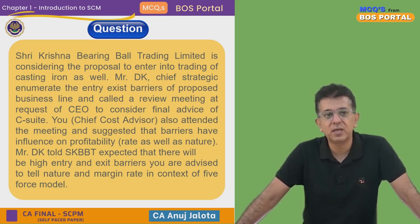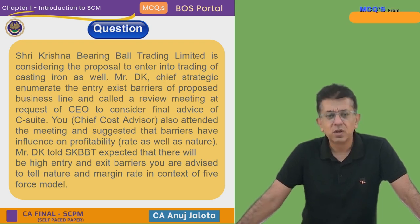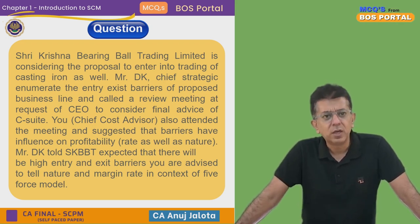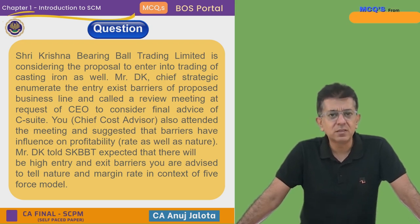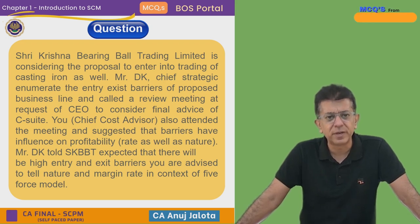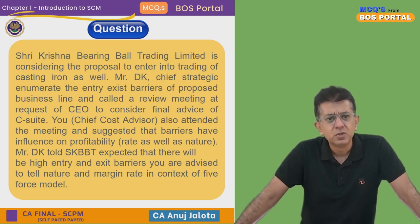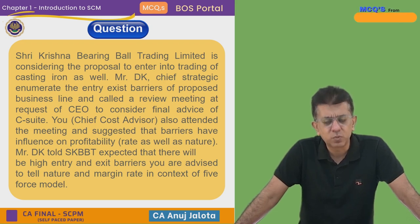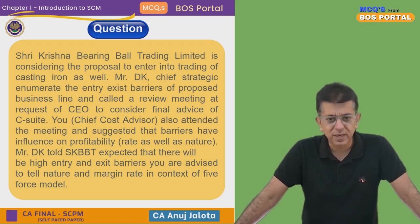The Five Forces Model was made by Michael Porter. He stated that entry and exit barriers basically affect the margin — that is, the profitability. So in this scenario, there will be high entry and exit barriers. What does this mean?